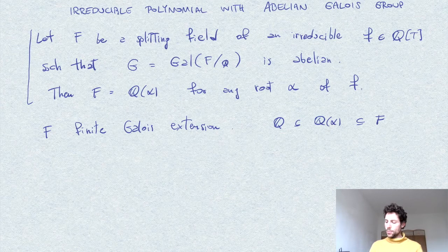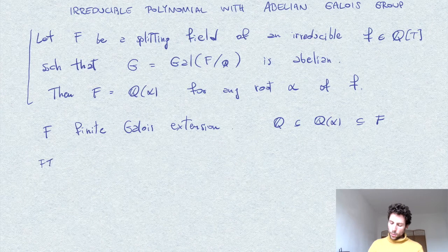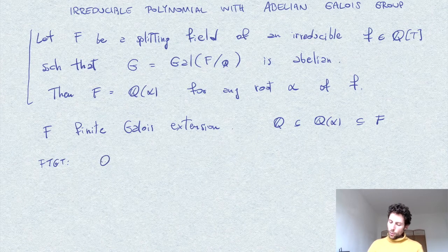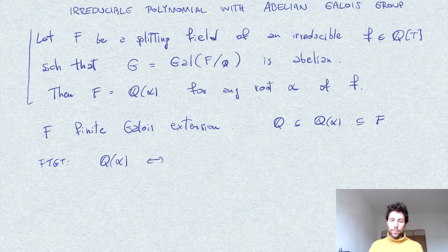But then the fundamental theorem of Galois theory tells us that this Q of alpha corresponds to a subgroup, say U of G.